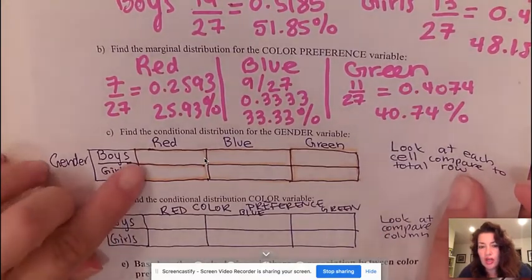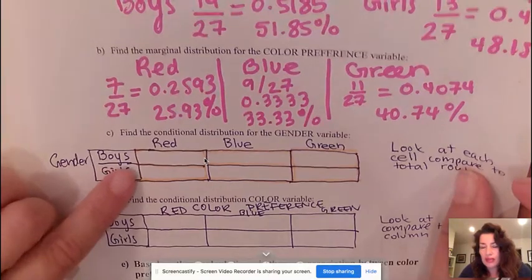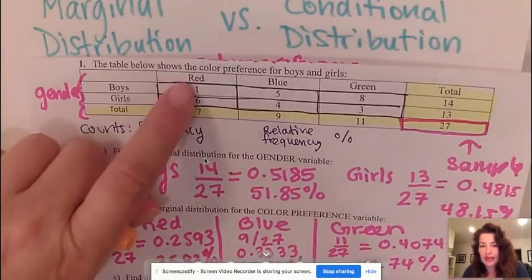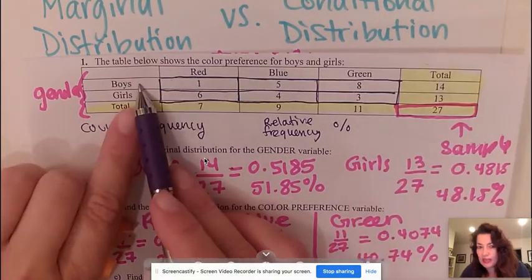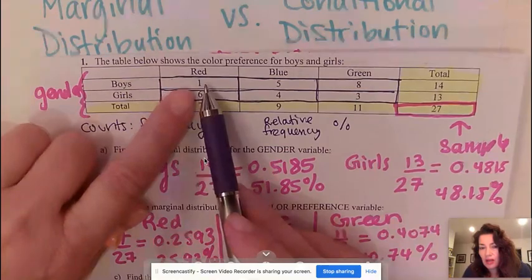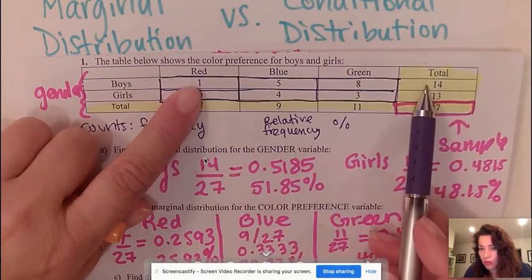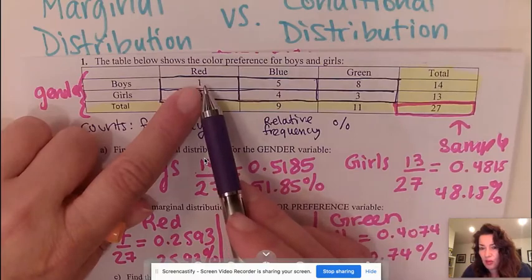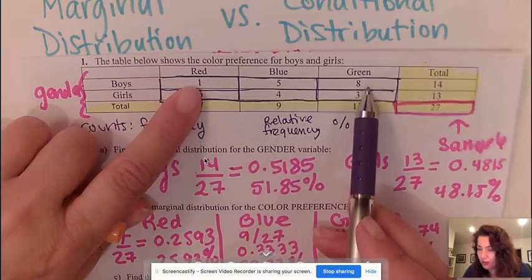When I look at the cells the first thing I'm going to look at is my rows, so I could first look at the boys and I'm going to look across. Each cell is going to be the count on the inside divided by its total row. For example, this will be 1 out of 14, this will be 5 out of 14, and this will be 8 out of 14.